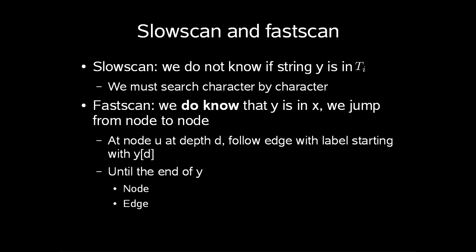What we must use these for is two scan methods named slow scan and fast scan. Slow scan we use if we don't know if the string y is in t(i), then we must search character by character. Fast scan we can use if we do know that y is in x, then we can just jump directly from node to node. At node u, at path depth d, follow the edge with label starting with y[d]. Continue until we reach the end of y. Either we'll end on a node if y is in t(i), or we'll end on an edge if y is a prefix of a string in t(i).